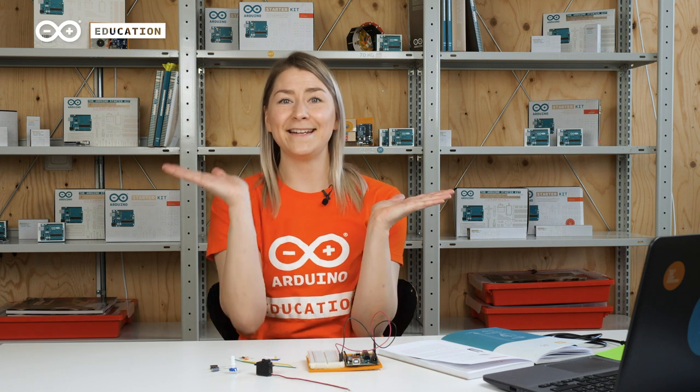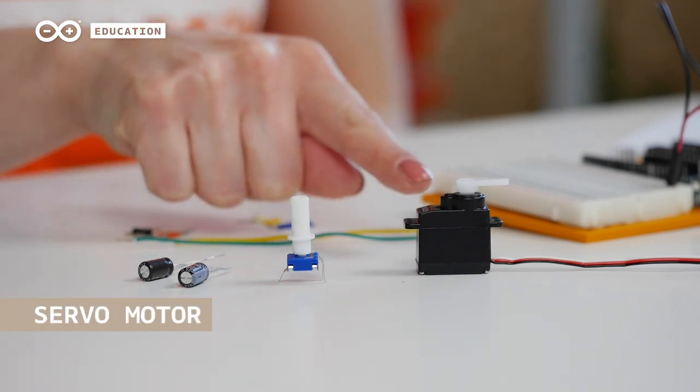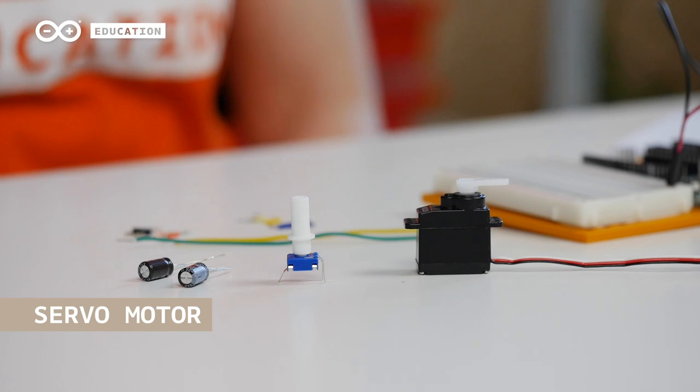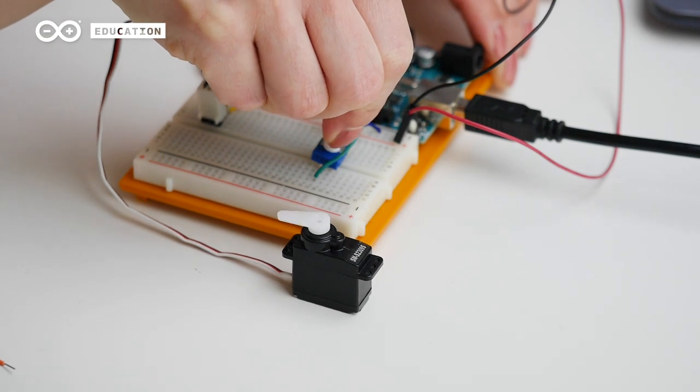The type of servo motor that we have in the starter kit is a micro servo that can rotate 180 degrees, which is half of a revolution. We decide which angle we want the servo shaft to go to and control the position of the shaft by sending the right signals to a control circuit inside the motor. A pulse width modulation signal is used to tell it where to rotate.